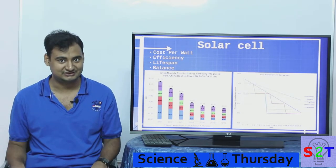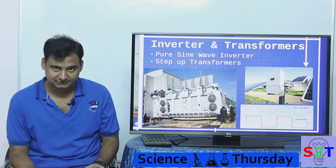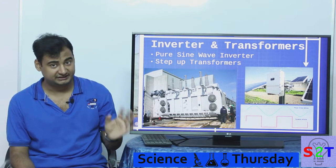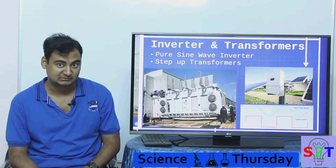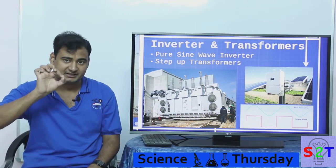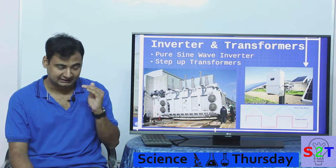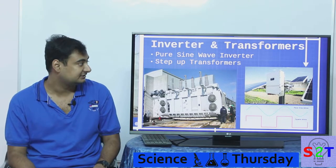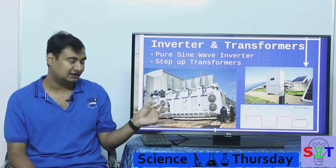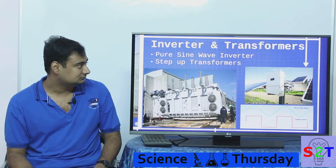Now for the inverter and transformer: the inverter must produce a pure sine wave — you can't feed a non-pure sine wave into the grid. Pure sine wave inverters used to be very expensive, but the price has come down considerably. The output is still slightly jagged, so sending it through a large step-up transformer smooths it to an almost perfect level. These transformers are designed for 24/7 operation over 25 years — some have been running for 75 years.